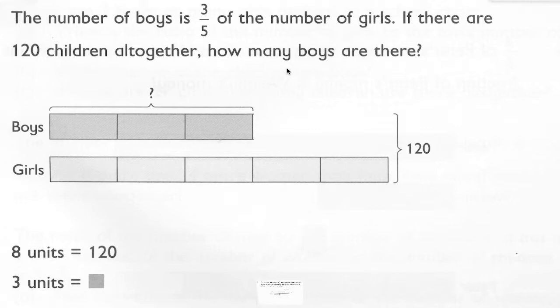In this question, we're told that the number of boys is three-fifths the number of girls. So right away we should know that the number of boys is going to be less than the number of girls, right? It's three-fifths of the number.